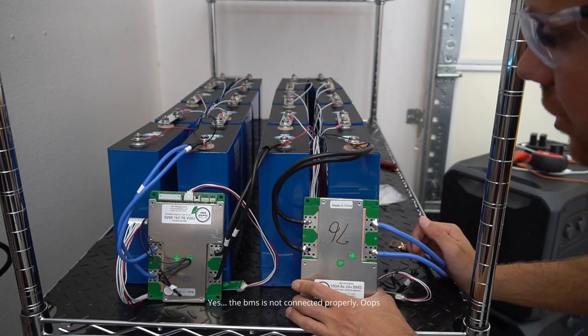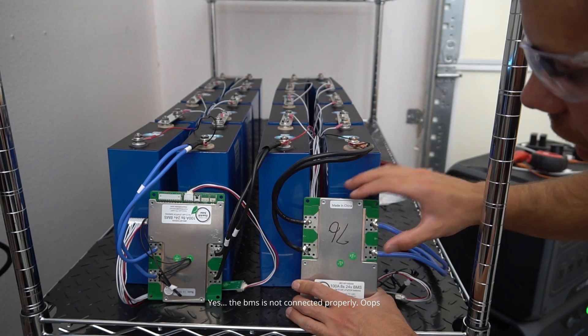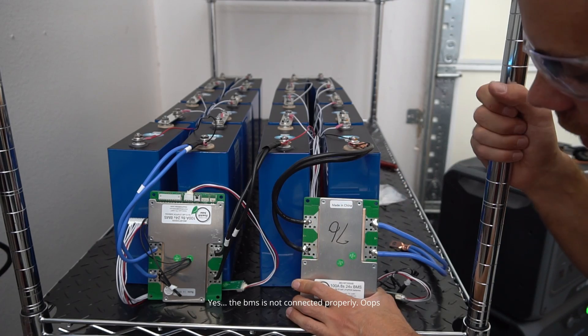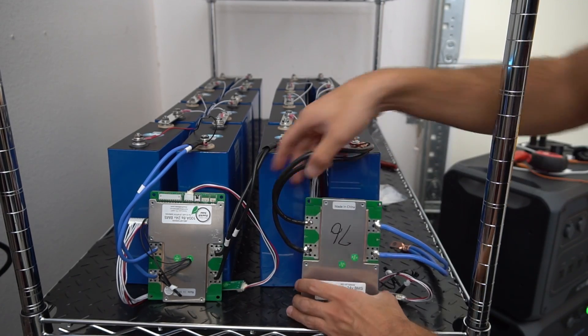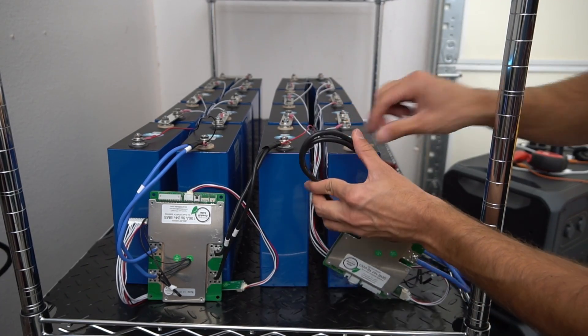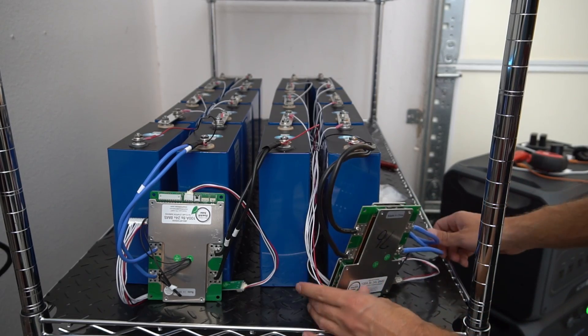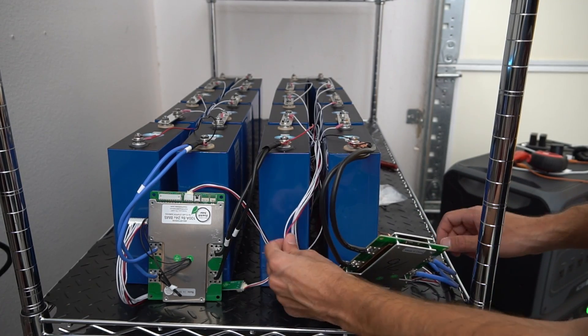Up until now everything's been very smooth but having these BMSs unsecure and close to each other scares the heck out of me. So I'm going to have to secure these somehow. For now I'm just going to zip tie this so that I can run a conductor over here and cycle this battery today because I actually need this battery.